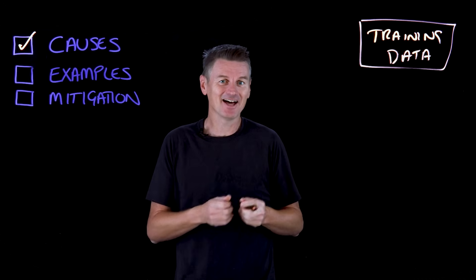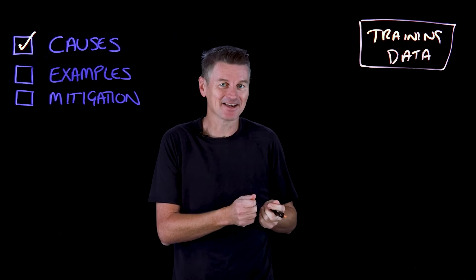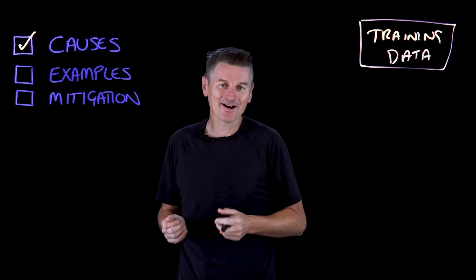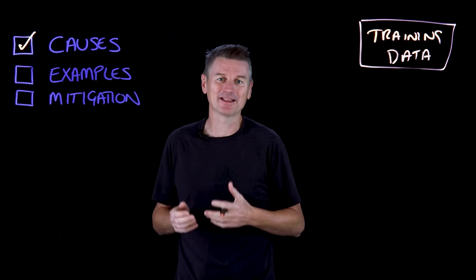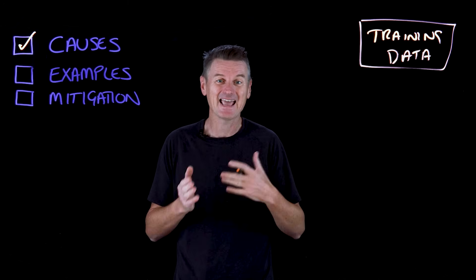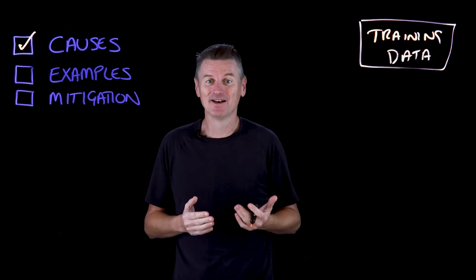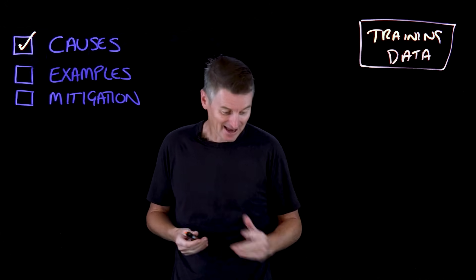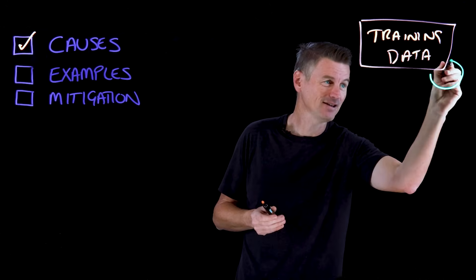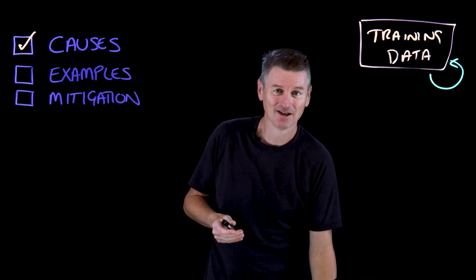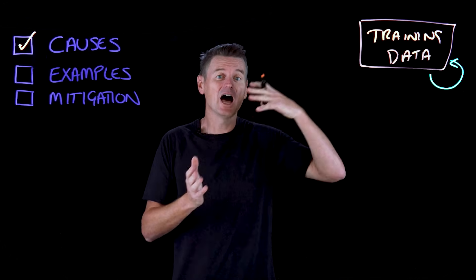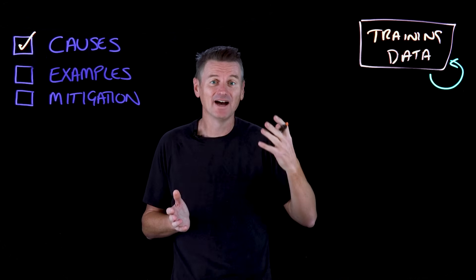A little bad data can go a long way. AI systems that generate biased results may use those results as input data for further decision making, creating a feedback loop that can reinforce this bias over and over again.